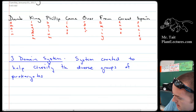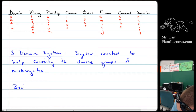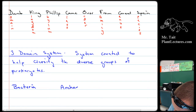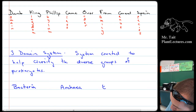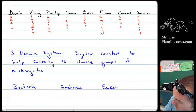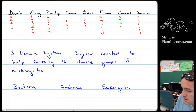There are three different domains: bacteria, archaea, and eukaryota.